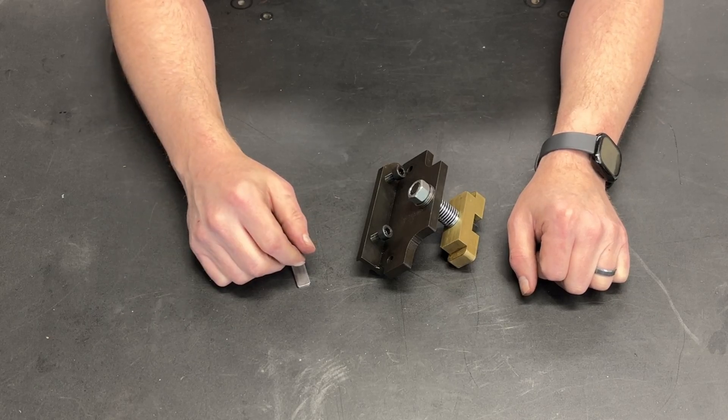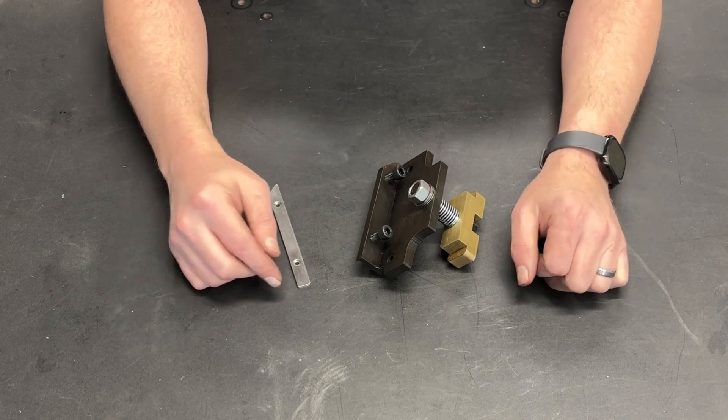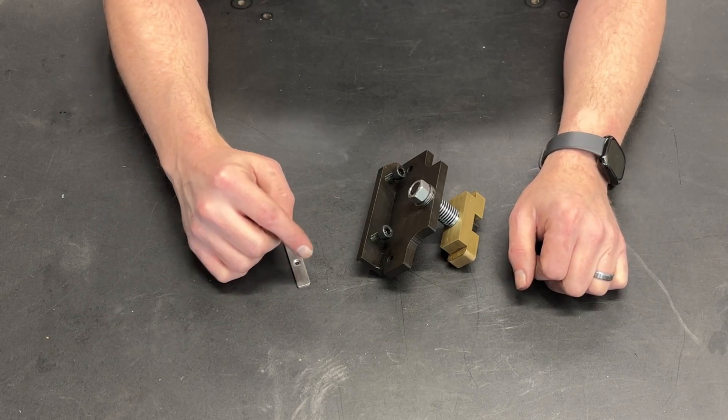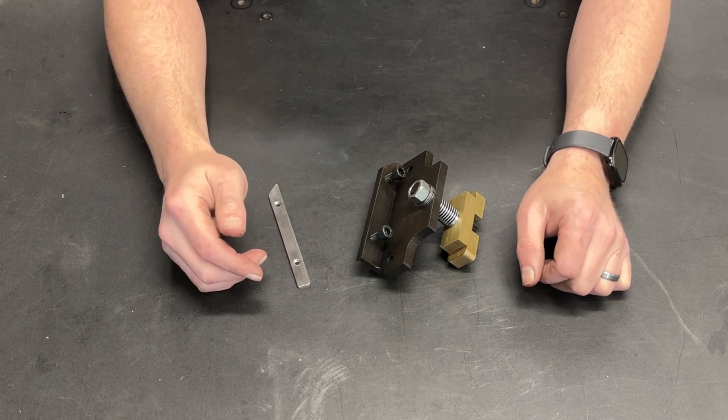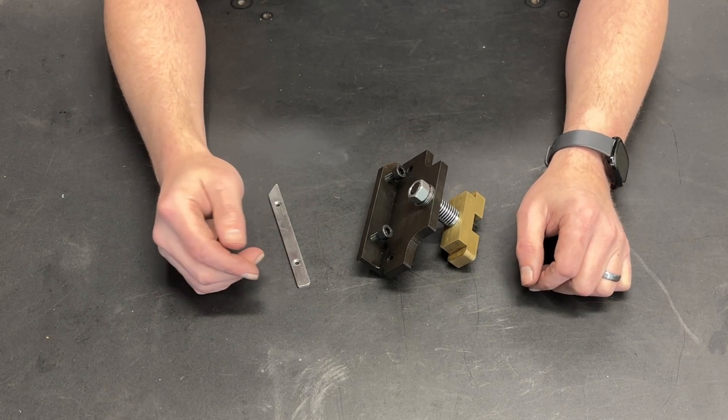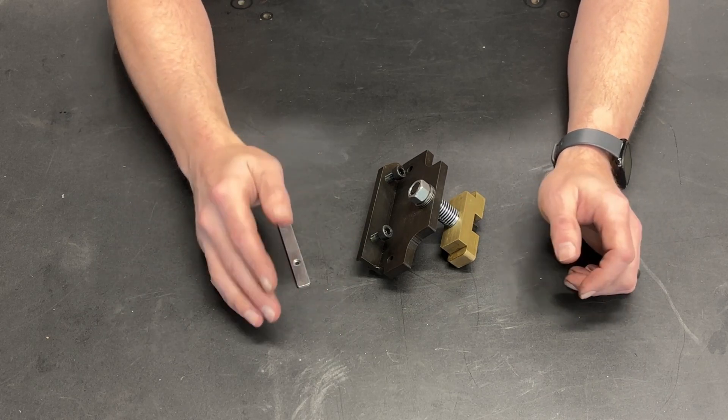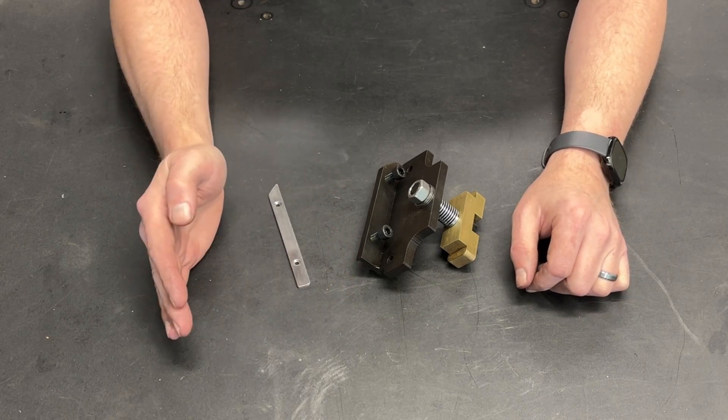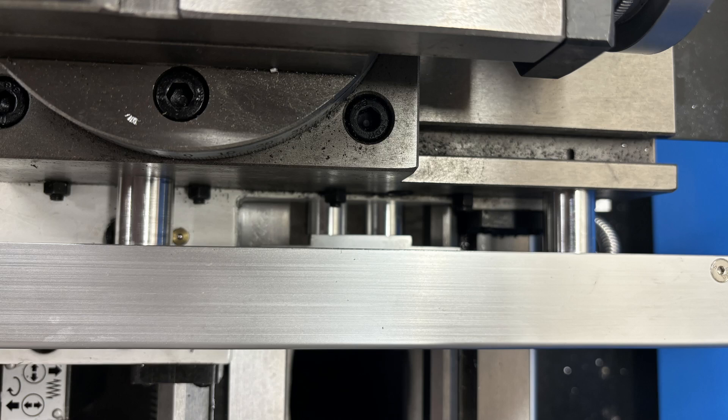And I thought, that's dumb. That's not the best way to do this. If that is how that was supposed to be done, why weren't those components installed before the DRO scale? I thought, this is an easy fix. I can easily make this work. All I have to do is space the scale out a little further and then I'll have access to both carriage locking nuts. And that's exactly what I did.